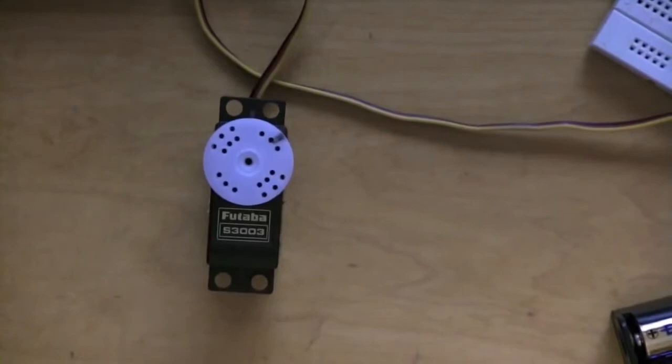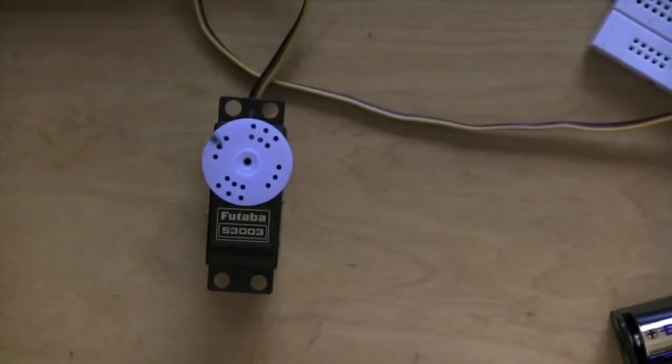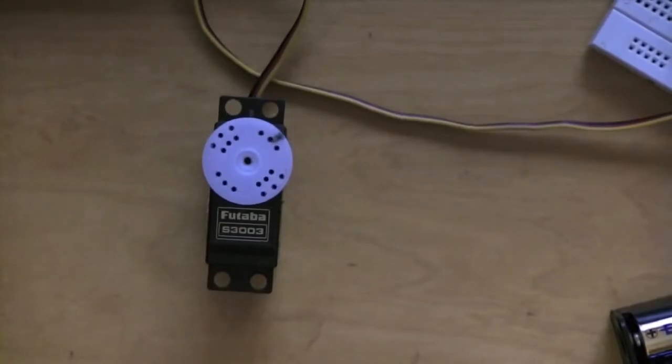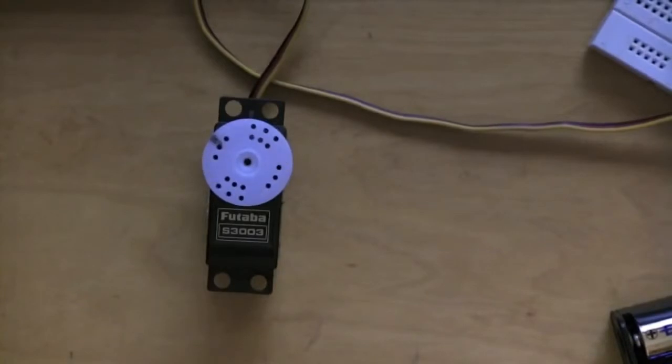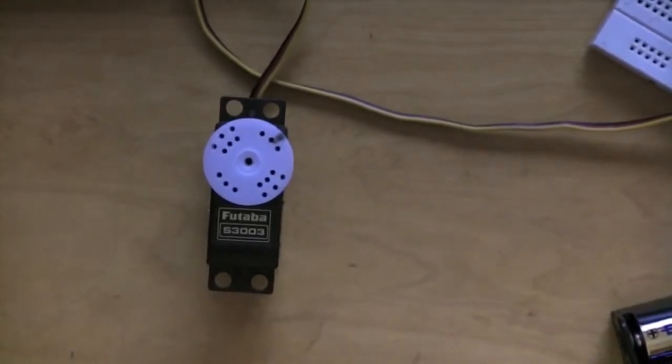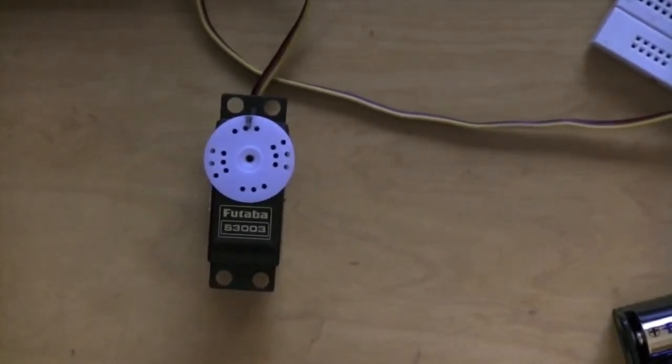The problem here is that a lot of servos don't work right off the bat at the values of 1,000 and 2,000 microseconds. You have to give it slightly different pulses. It varies with each servo. So for this, I'm going to guess maybe an 800 millisecond pulse to make it go full left, and maybe a 2,200 millisecond pulse to make it go right. So let's adjust those values in the code and try it again.